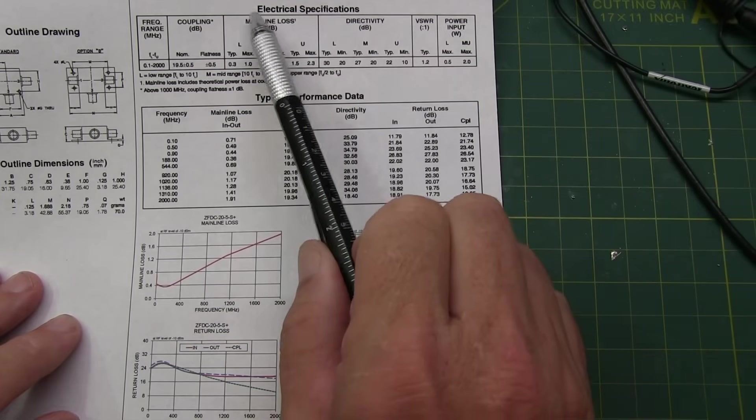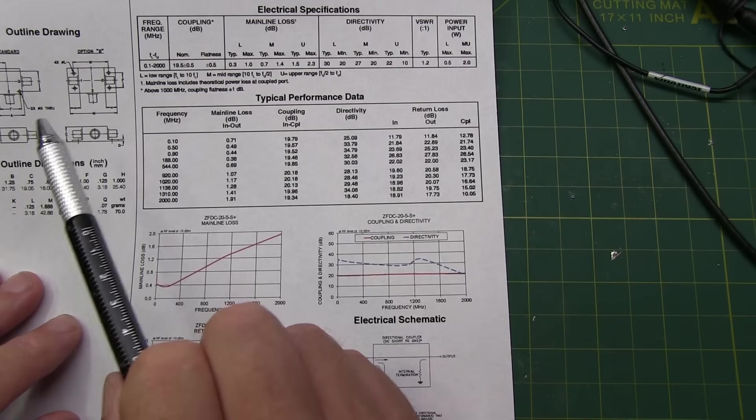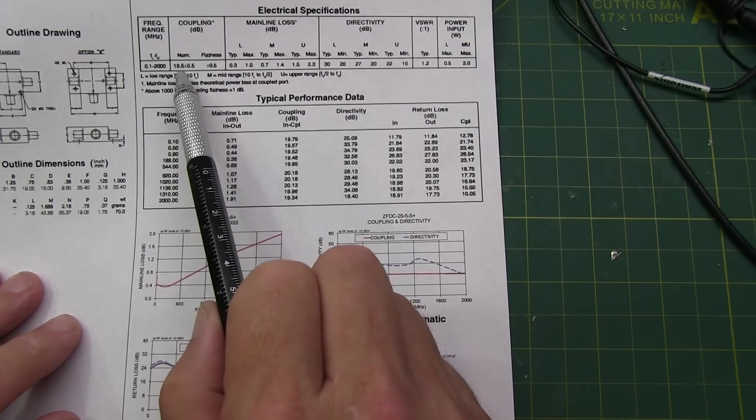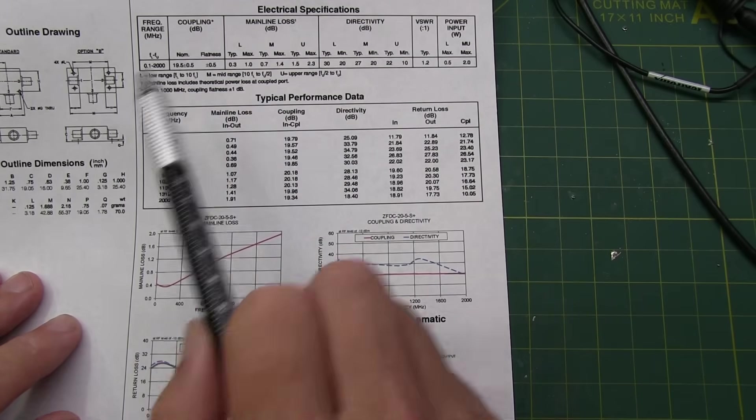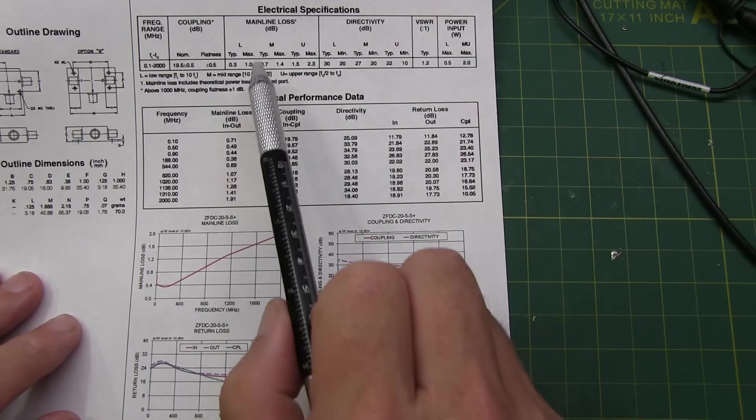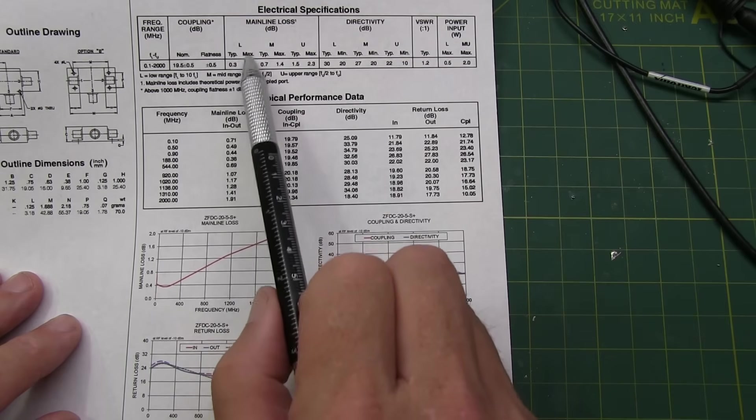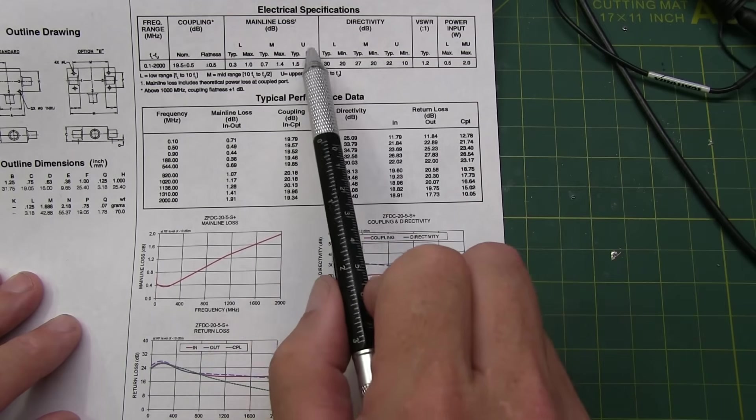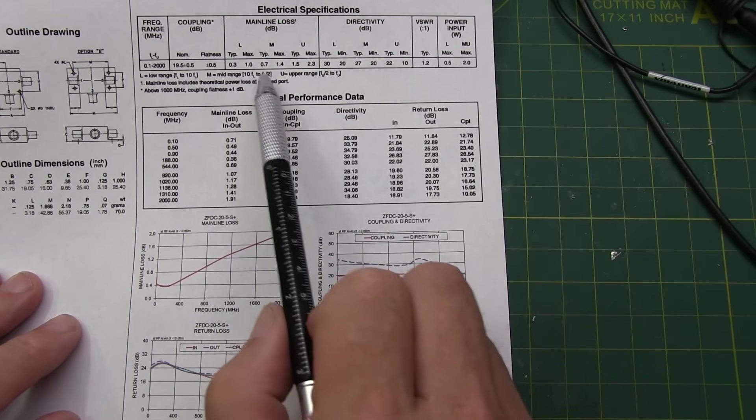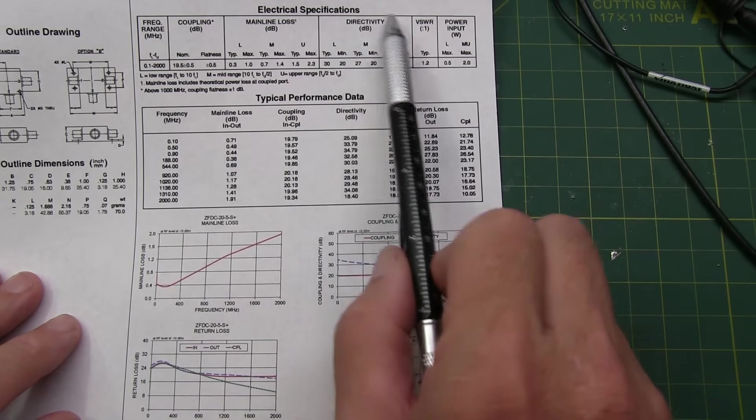So the basic specifications are shown in this part of the table here. Again, we're looking at a 100 kHz to 2 GHz frequency range. The coupling ratio, which is ideally the most important parameter, is nominally 19.5 dB plus or minus a half a dB with about a half a dB of flatness. The mainline loss through the forward path of the device, they give it in three frequency ranges. So this is basically 100 kHz to 1 MHz, then 1 MHz to 1 GHz, and then 1 GHz to 2 GHz. And they show a typical value, you know, 0.3 dB, 0.7 dB, 1.5, and then a max value for each of those ranges. And then finally we show the directivity, typically in the low range about 30 dB, in the mid range about 27 dB typically, and the upper range about 22 dB typical.